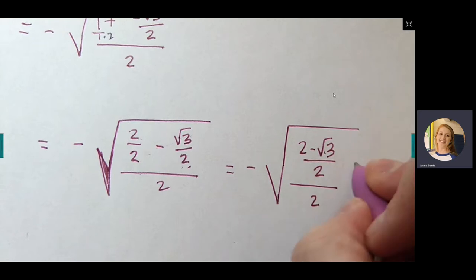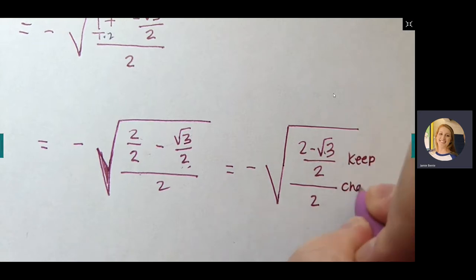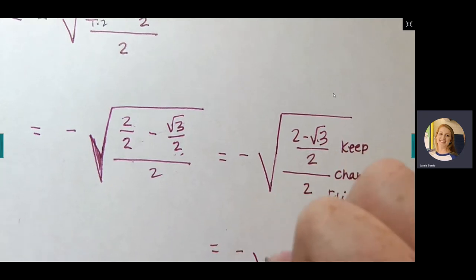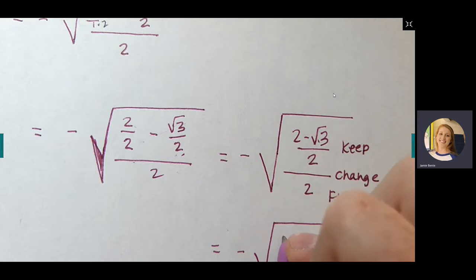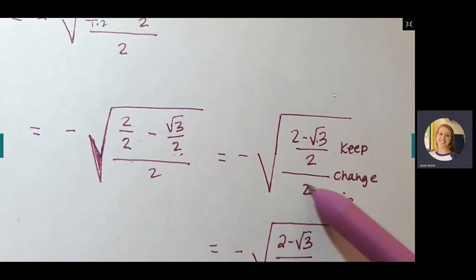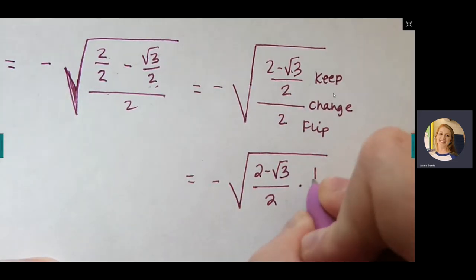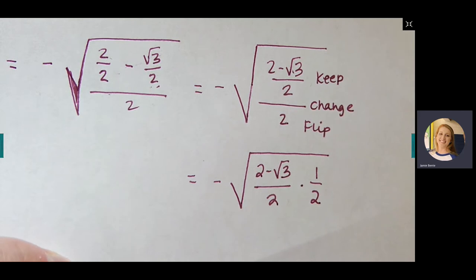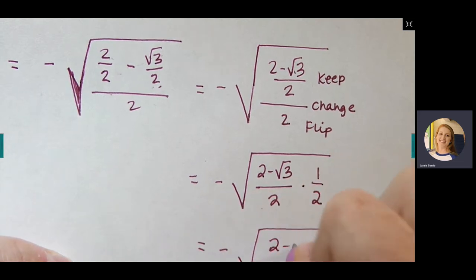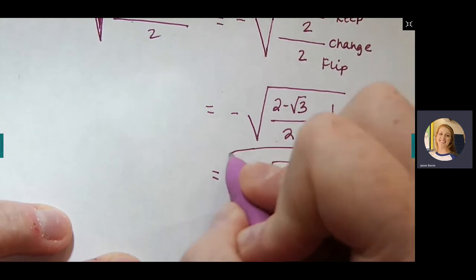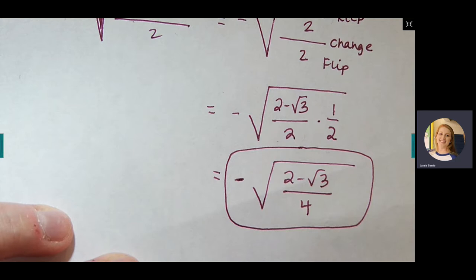Now you have one big fraction in the top, so you can keep-change-flip. The 2 in the denominator becomes 1/2, and multiplying tops and bottoms gives: negative square root of (2 − √3) over 4. You can leave it there for the homework — they don't require you to simplify any further. The only thing they might want is to separate it as √(2 − √3) / √4, since 4 is a perfect square.